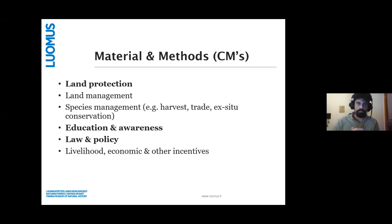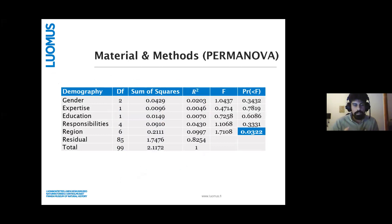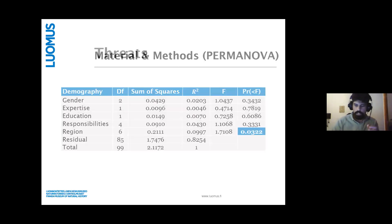Unfortunately there was a fairly significant geographical bias — most of our respondents had expertise on the Palearctic and Nearctic regions. We did a permanova analysis to determine which of several demography categories significantly impacted the responses — the relevance responses scored from one to five, not relevant at all to most relevant — and the only variable that was significant was the region. So let's start with threats.